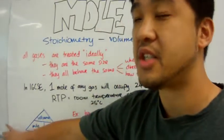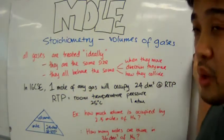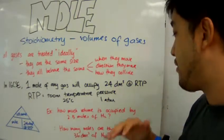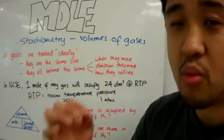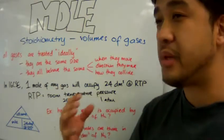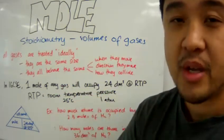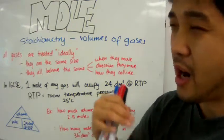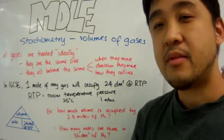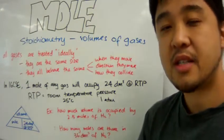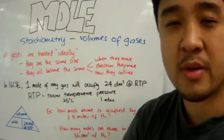In IGCSE one mole of any gas will occupy 24 cubic decimetres of space at RTP. Now what is RTP? RTP is merely the condition of which the gas will exist in. For example, so for RTP it's called room temperature pressure which means the temperature is at 25 degrees Celsius and the pressure is at 1 atm or atmospheric pressure.